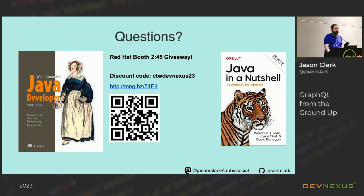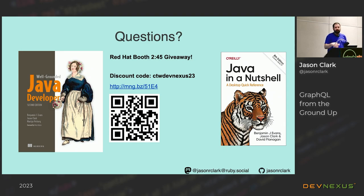On streaming data: there is one other top-level root type, which is subscription. Subscriptions are meant to return streaming data. We've used that a little bit — it would allow you to push things back over server-sent events or WebSockets, and probably with HTTP/2 there will be some support there. We have a pretty basic implementation of it in one small corner, but it is available as a thing within the spec.